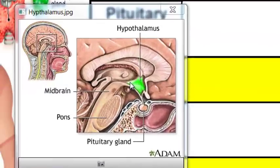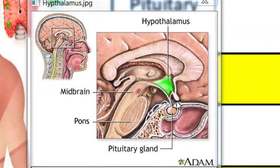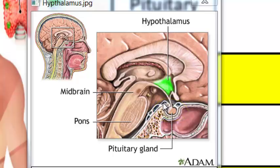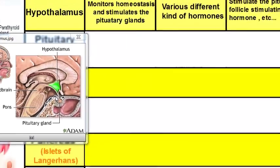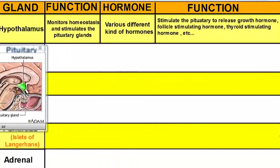The hypothalamus controls or stimulates what we call the master gland, known as the pituitary gland. The function of the hypothalamus is to stimulate the pituitary gland to release several hormones, such as growth hormone, follicle-stimulating hormone, and thyroid-stimulating hormone. If the hypothalamus didn't kick our pituitary gland into gear, many hormones that need to be produced wouldn't be, because the hypothalamus recognizes which hormones need to be made.